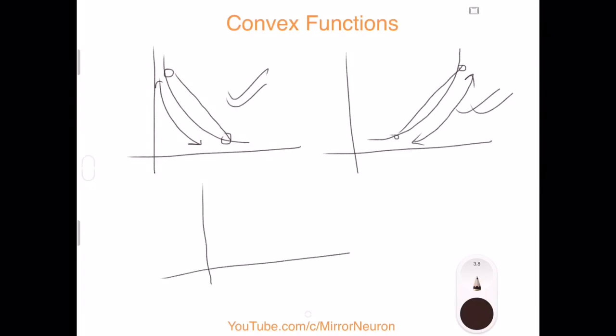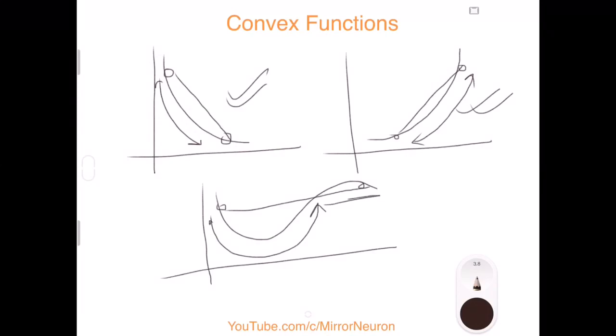But what if I take something like this - is it a convex function? Can you answer? Please put that answer in the comment section. If I take these two points and connect them, I can see that for this portion of the graph, my line is above the function, but after this, the line is below that function. So this is not a convex function.